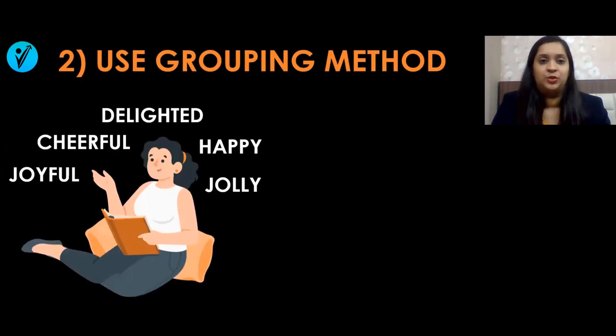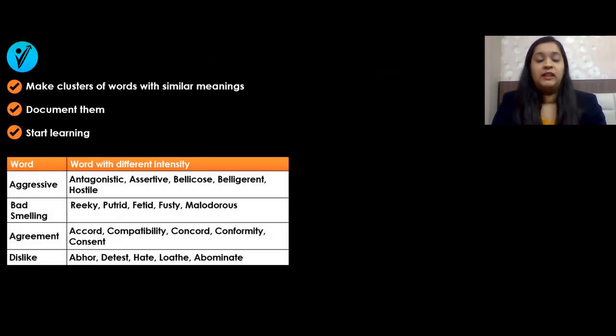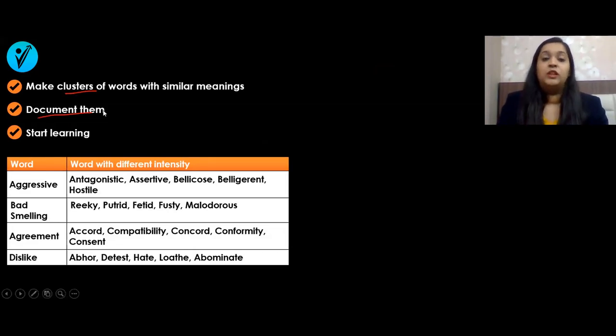The next way is using the grouping method. When you're reading through a word list and trying to learn words every single day, you can start journaling them and grouping them into different groups. Look at the words here: joyful, cheerful, delighted, happy, jolly—all these words imply the same feeling of being happy, so you can group these words together.